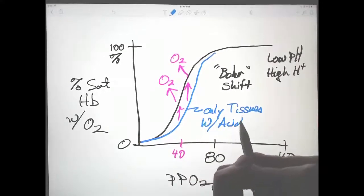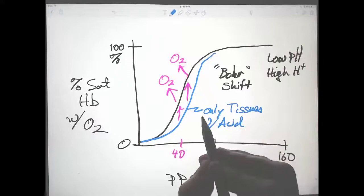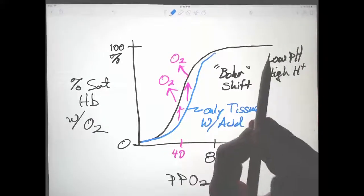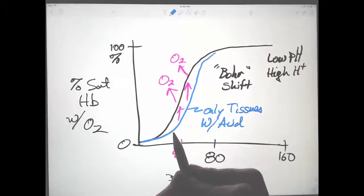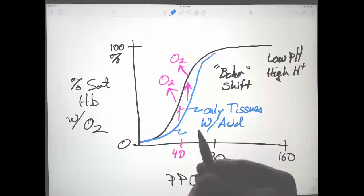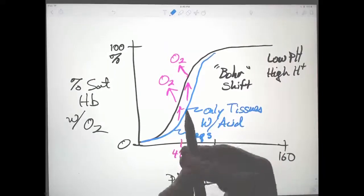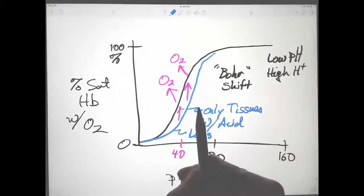Imagine that your legs are working hard, exercising like mad, and therefore the pH is low because you've got high carbon dioxide and high lactic acid. This would be the curve in your legs, and there you would be releasing extra oxygen to those hard-working muscles.